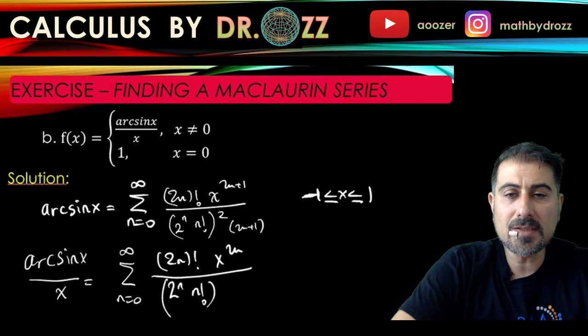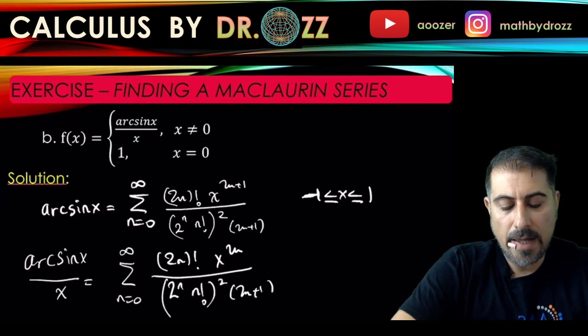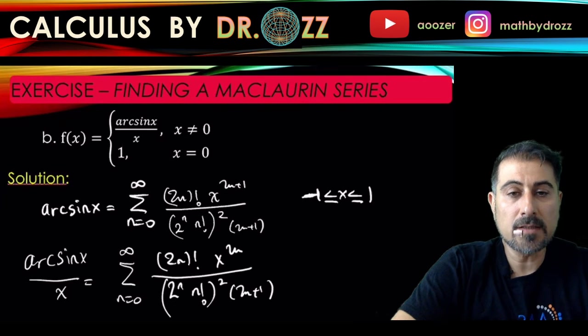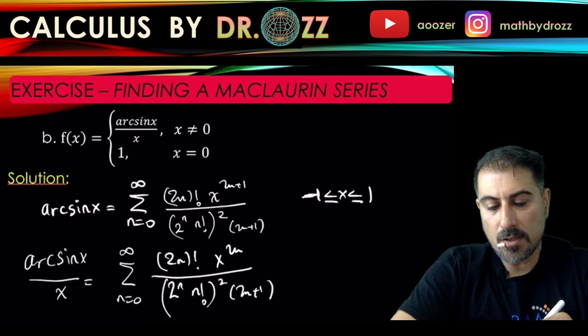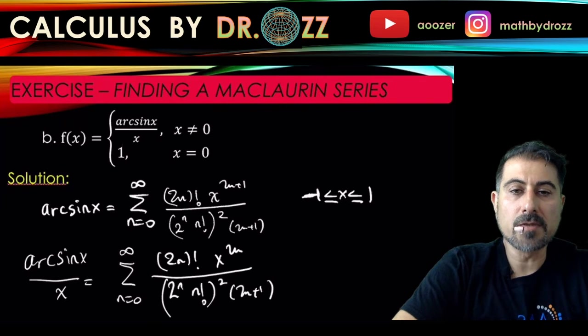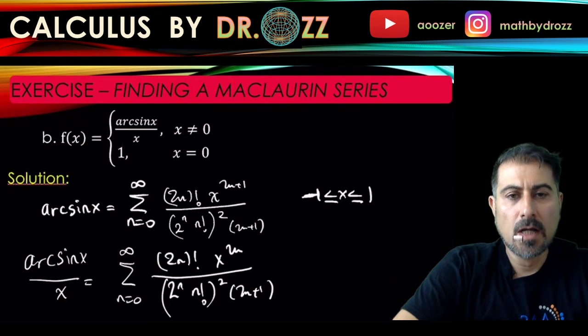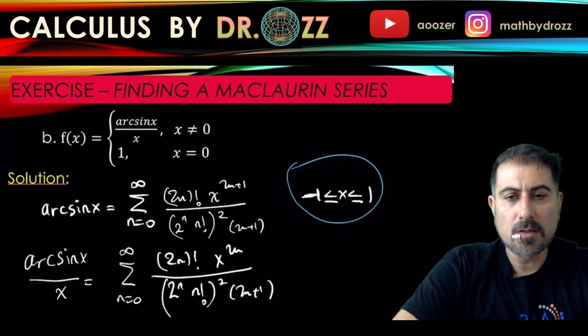I can do all of these tricks because x equals zero is within the interval of convergence. Here is the interval of convergence, minus one and one, so we are safe dividing arc sine x by x.